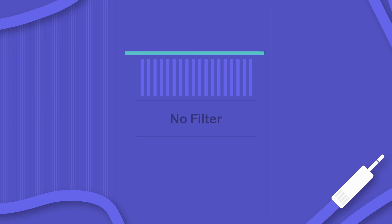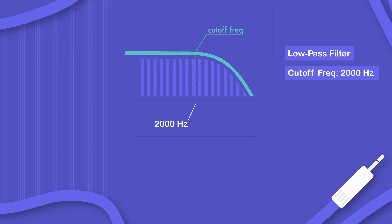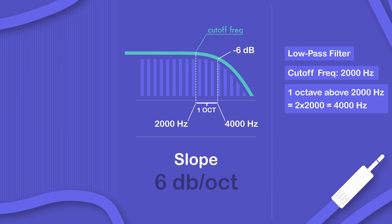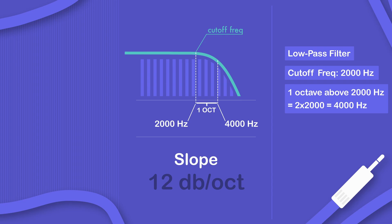Let's quickly hear that in action. Here's our sound example unfiltered. Now let's apply a low pass filter with a cutoff frequency of 2000 Hz and a 6 dB per octave slope. This means that one octave above the cutoff frequency — which is double that frequency, so 4000 Hz — the sound is 6 dB less loud. Let's change the filter slope to 12 dB per octave: now at 4000 Hz the sound is 12 dB quieter, and the same thing at 24 dB per octave.